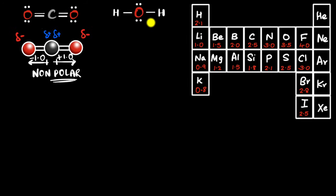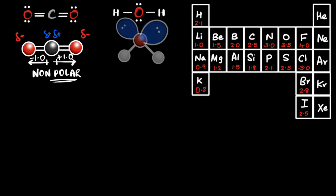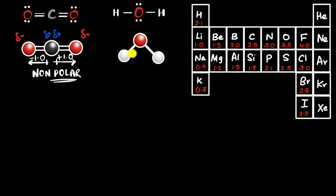Let's consider a water molecule. The first thing to look at is its 3D structure, since that affects the molecule's polarity. Using VSEPR on the central oxygen atom, we count four electron groups around it. Four electron groups give a tetrahedral electron geometry, with two of those positions occupied by lone pairs forming corners of the tetrahedron.